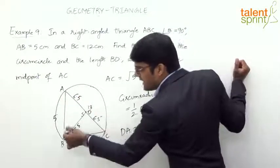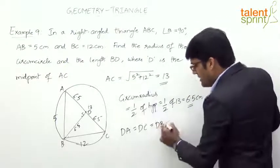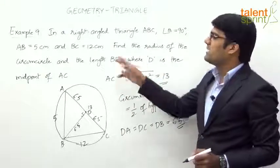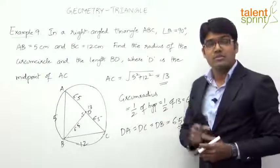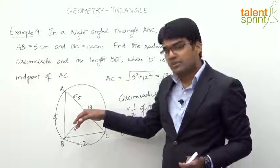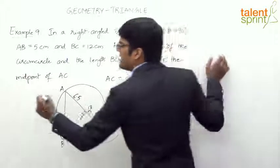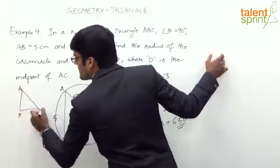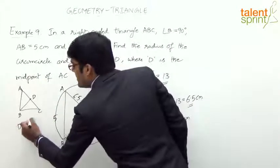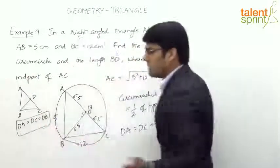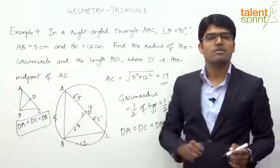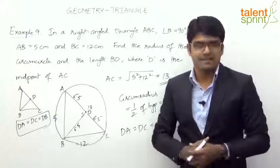So DA, DC, and DB all denote the radius of the circumcircle, and the length BD is 6.5 centimeters. The important point to remember is: for any right angle triangle, if you draw a line from the right angle vertex to the midpoint D of the hypotenuse, then DA equals DC equals DB, and each equals half of the hypotenuse. Keeping this property in mind makes it easy to solve questions on right angle triangles and their circumcenter or circumcircle.